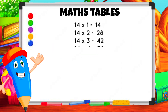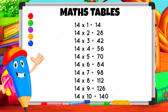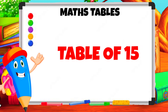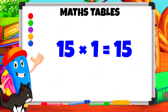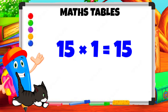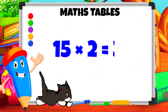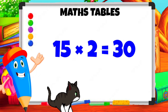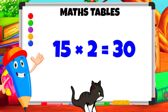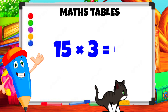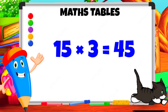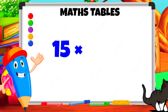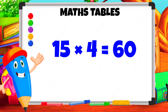Table of 15. 15 1s are 15. 15 2s are 30. 15 3s are 45. 15 4s are 60.